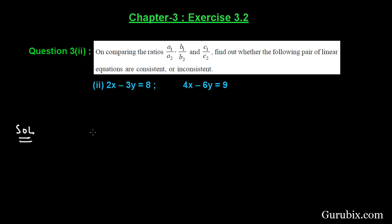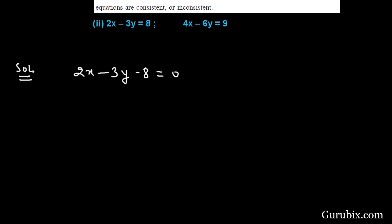We are given two linear equations and we have to write them in standard form. The first equation is 2x minus 3y equals to 8, then the standard form of this equation will be 2x minus 3y minus 8 equals to 0. The standard form of the second equation is 4x minus 6y minus 9 equals to 0.